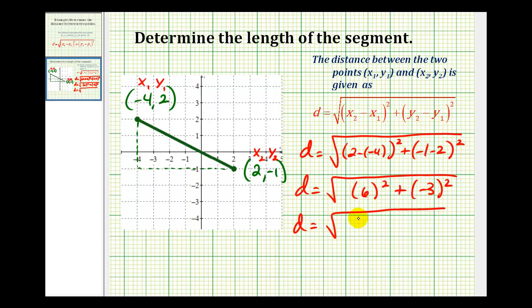So 6² would be 36. Negative 3 squared would be positive 9. So we have the distance is equal to the square root of 45.